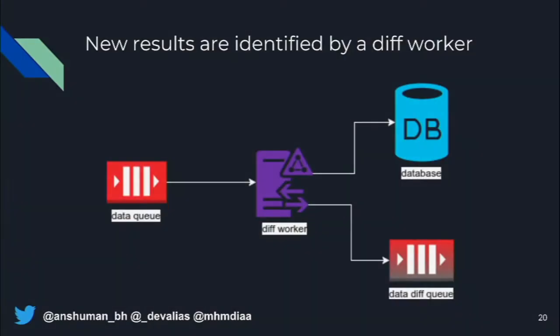Once a workflow is finished, there's a worker that compares the results from the previous run to the new run. One of the biggest problems in bug bounties is that if you keep running your tools again and again on something, you'll keep seeing the same information. We have a concept of a diff worker that compares all the results stored in the database with the new run and outputs only what has changed into a different queue.